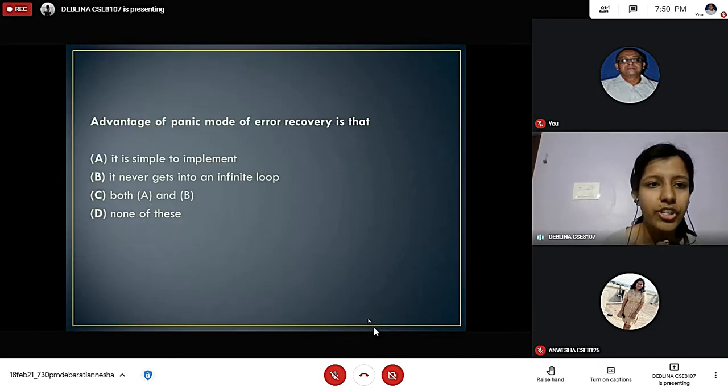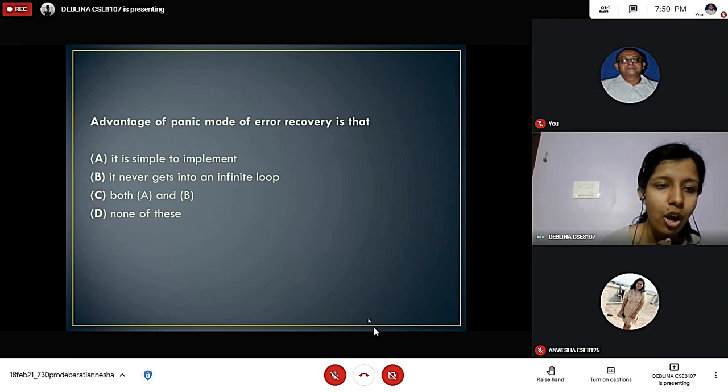Here we have the third question. The advantage of panic mode of error recovery is: Option A: It is simple to implement. Option B: It never gets into an infinite loop. Option C: Both option A and B. Option D: None of these. The answer is option C, both A and B.